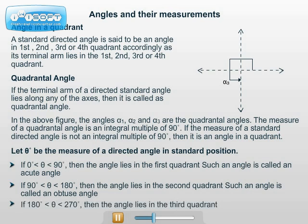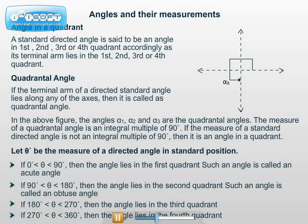If 180 degrees less than theta degrees less than 270 degrees, then the angle lies in the 3rd quadrant. If 270 degrees less than theta degrees less than 360 degrees, then the angle lies in the 4th quadrant.